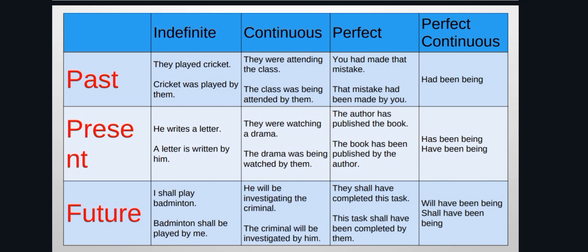Now for perfect tense: 'You had made that mistake.' Here 'you' is the subject, 'had' is the helping verb, 'made' is the past participle, and 'that mistake' is the object. In passive voice: 'That mistake had been made by you.' In continuous tense we add 'being,' and in perfect tense we add 'been.'